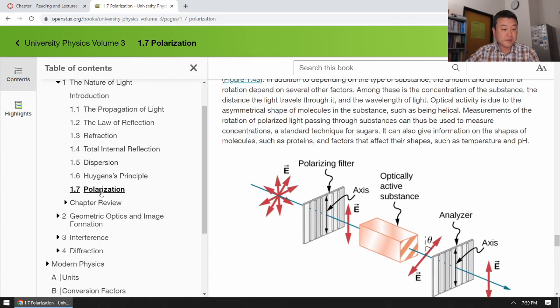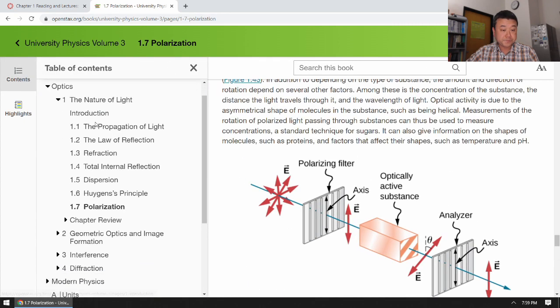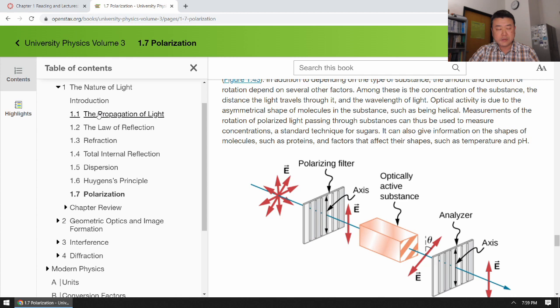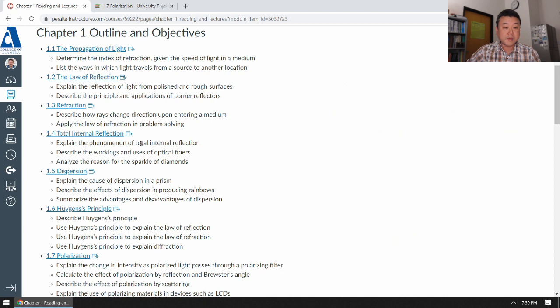So this is chapter one. It introduces a few properties of light that's important as a background material. So please take a look at it. Some of the more important things you will see covered in lecture, like with the refraction, derivation of law of refraction, and some discussion of polarization of light. And until next time, bye.